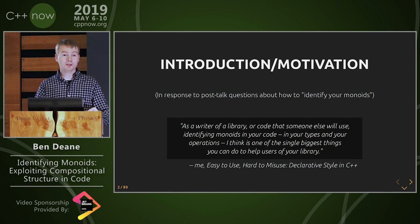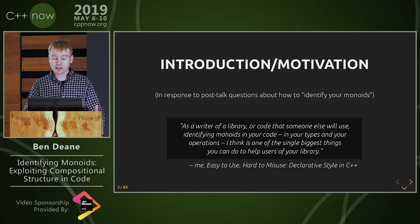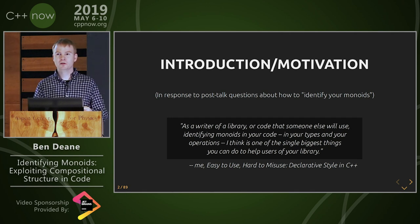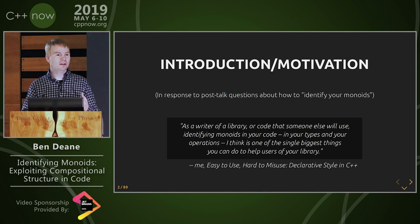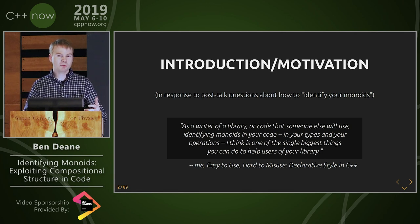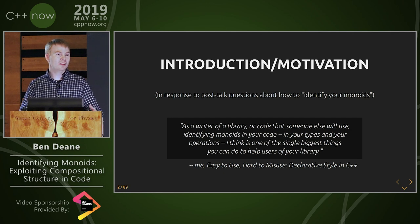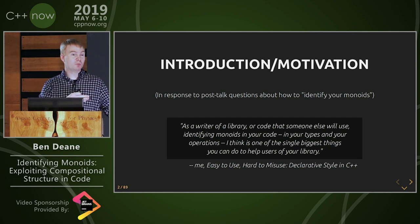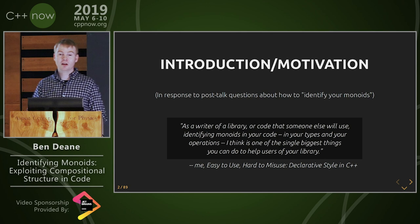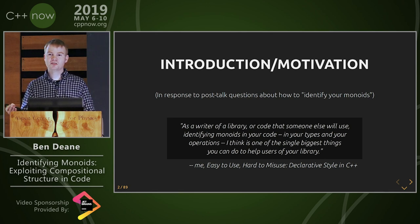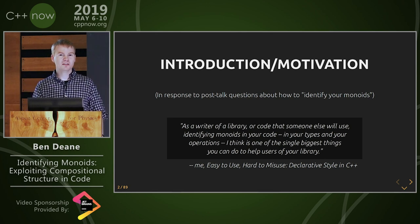Because as I hope to show in this talk, when we recognize monoids, it's sort of like the macro level equivalent of not doing raw loops. So many of us have seen Sean Parent's talks. Maybe some of us are accustomed to code reviews where we spot raw loops and say that could be an algorithm. Spotting monoids is at a larger scale, I think, similar to that.